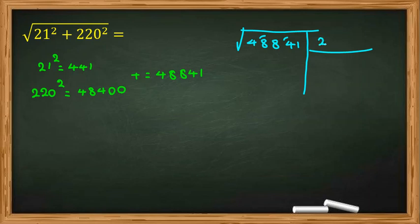And then you place maximum number that times itself is less than or equal 42. 2 times 2, 40. Then you consider 88. You multiply this one by 2 always, 4 here.